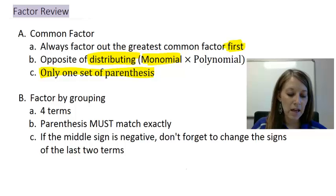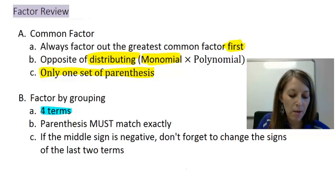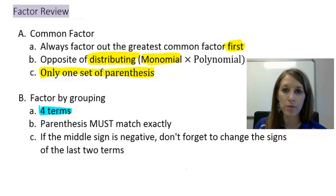The second technique that we learned was factor by grouping. We know that we can only factor by grouping if our polynomial has four terms in it. If it has any other number of terms, then it's guaranteed that factor by grouping won't work. Basically, you do a common factor a whole bunch of times. You group the first two, you group the last two.